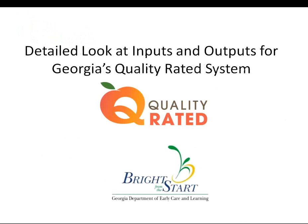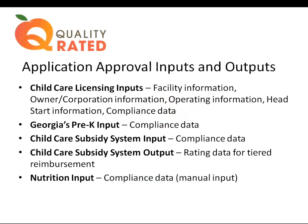These next slides outline the inputs and outputs for our system. The approval and application inputs and outputs show that the child care licensing system — the golden source of data — is inputted into the Quality Rated database. Child care licensing inputs facility information, owner and corporation information, operating information, compliance information, and whether the program is a Head Start or Early Head Start. Georgia Pre-K inputs compliance data regarding the Pre-K program at that location, and the child care subsidy system also inputs compliance data into Quality Rated.